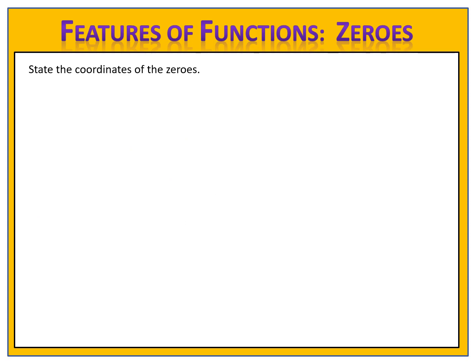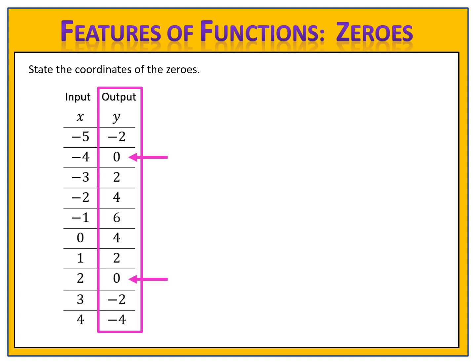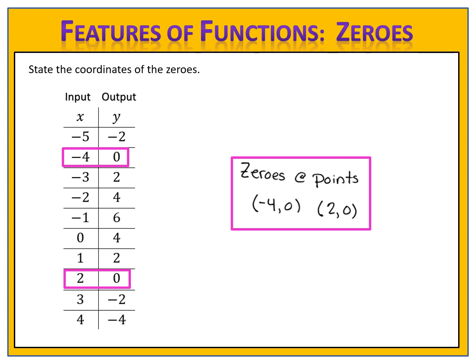Sometimes we're given a table of values — an input and an output table. Remember that the input is the x and the output is the y. The zeros of a function are always when the output is zero. So if we look in this input and output table, we look to see where the output is zero. We see that happens at input negative four, output zero, and at input two, output zero. Those are the zeros of the function: negative four, zero and two, zero.